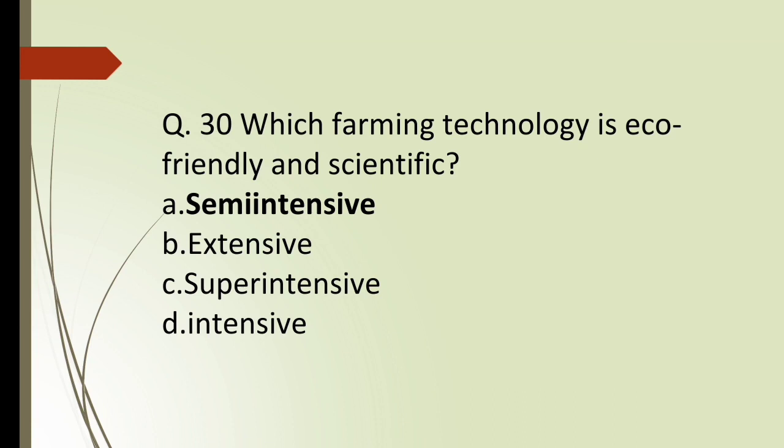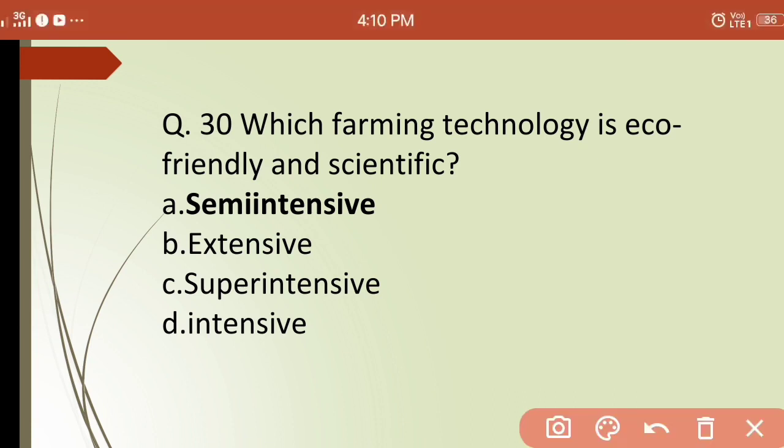Thirtieth question: which farming technology is eco-friendly and scientific? Options are: (a) semi-intensive, (b) extensive, (c) super-intensive, (d) intensive. The correct answer is semi-intensive — in semi-intensive farming, costs are not excessive and the system is more eco-friendly and scientific.